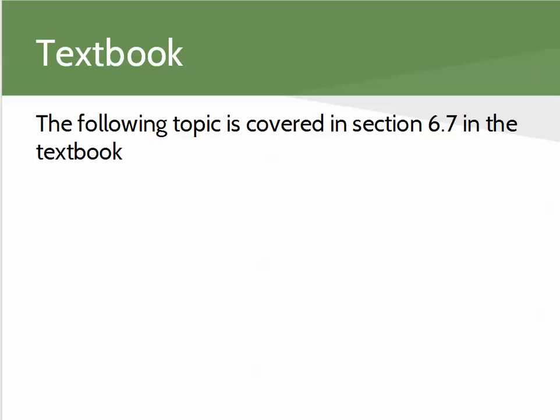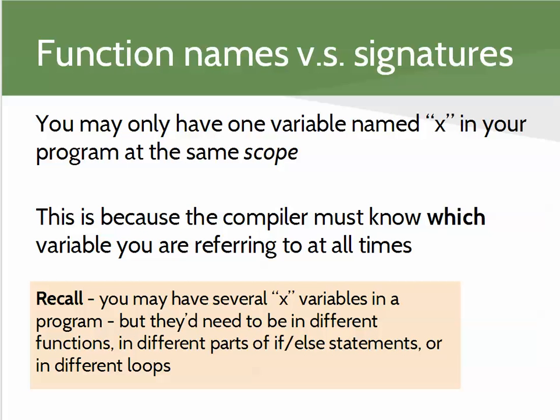This is covered in section 6.7 in the textbook. Understanding how we can declare multiple functions with the same name comes down to the difference between a function's name and what's called a function signature.